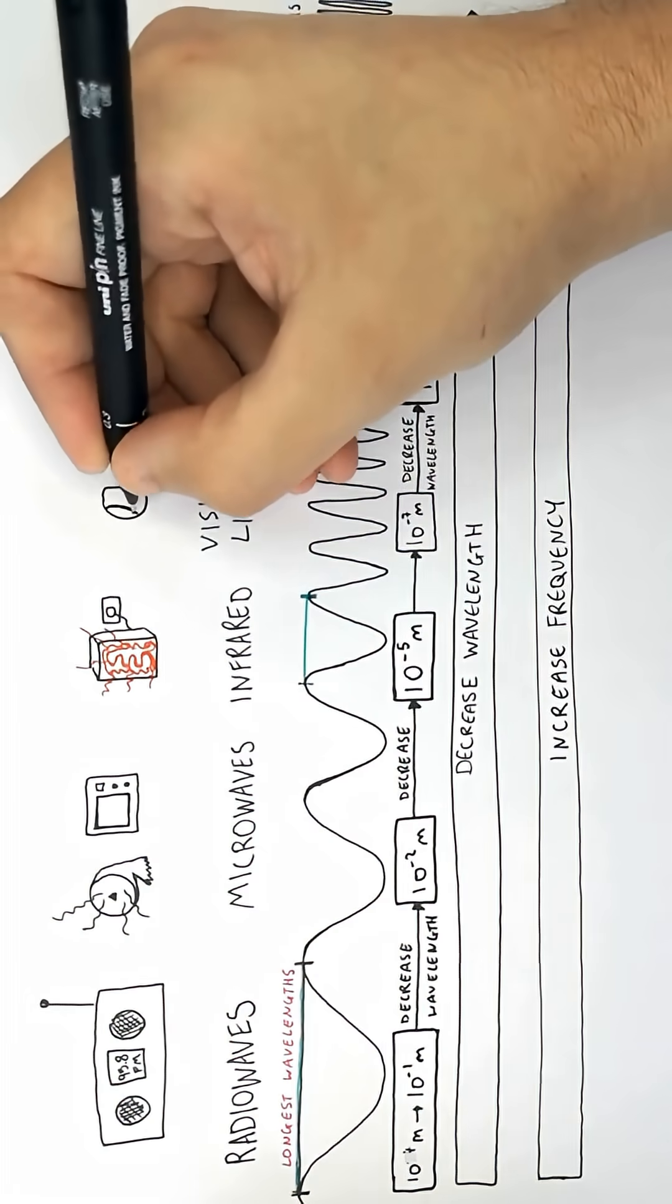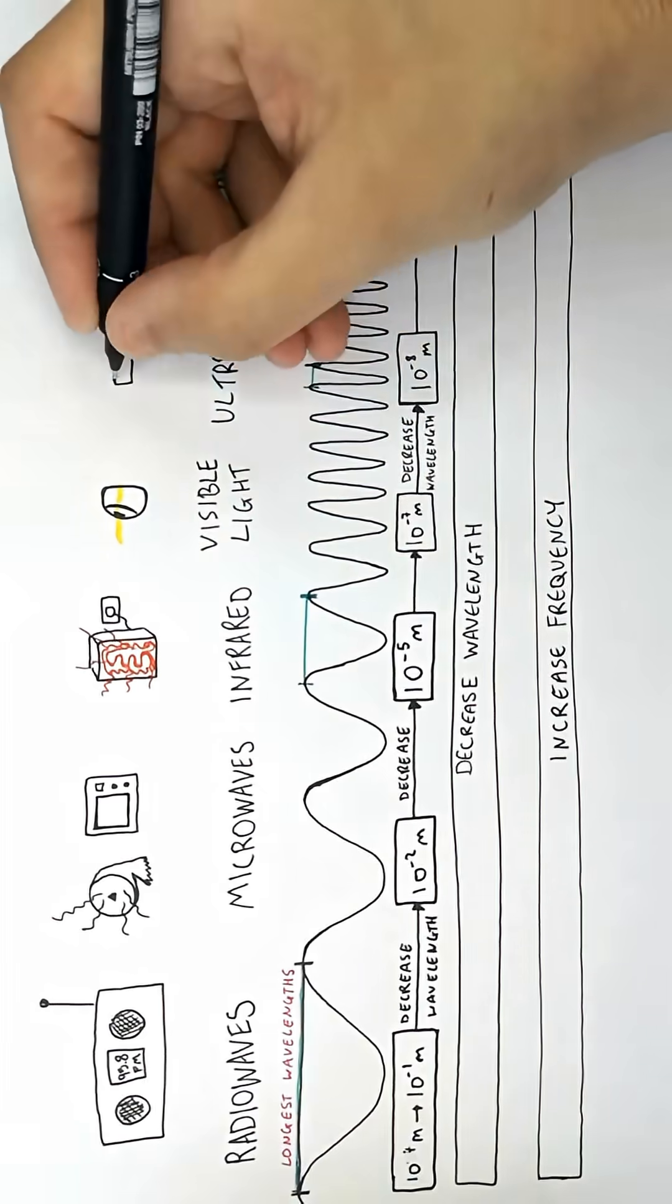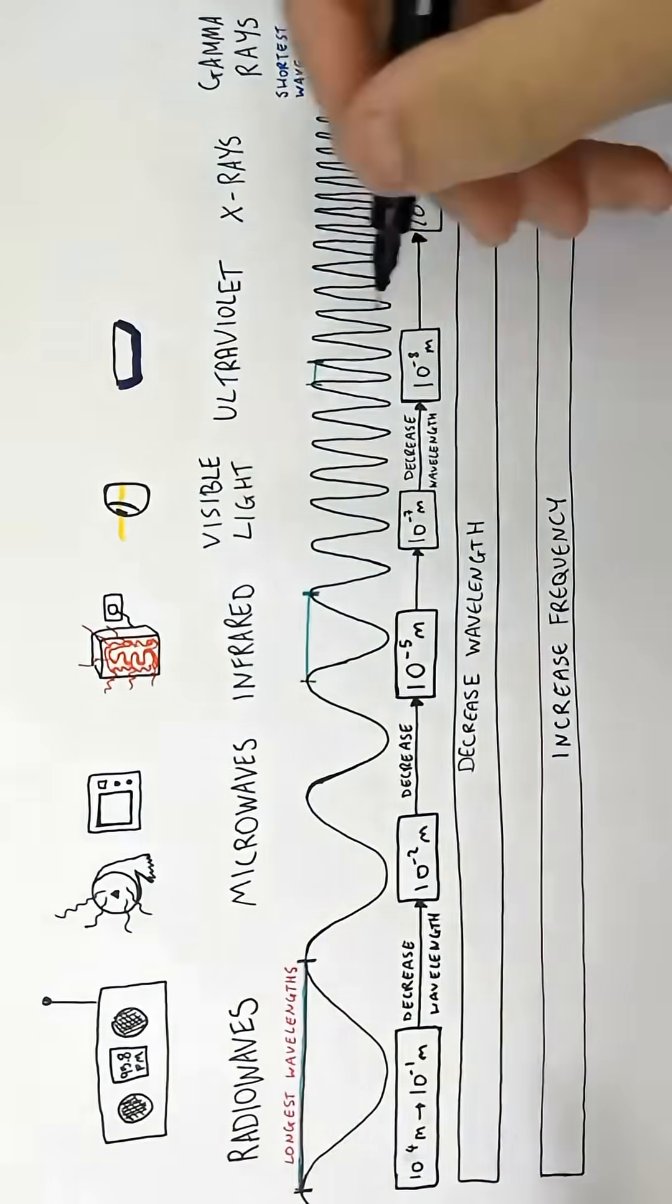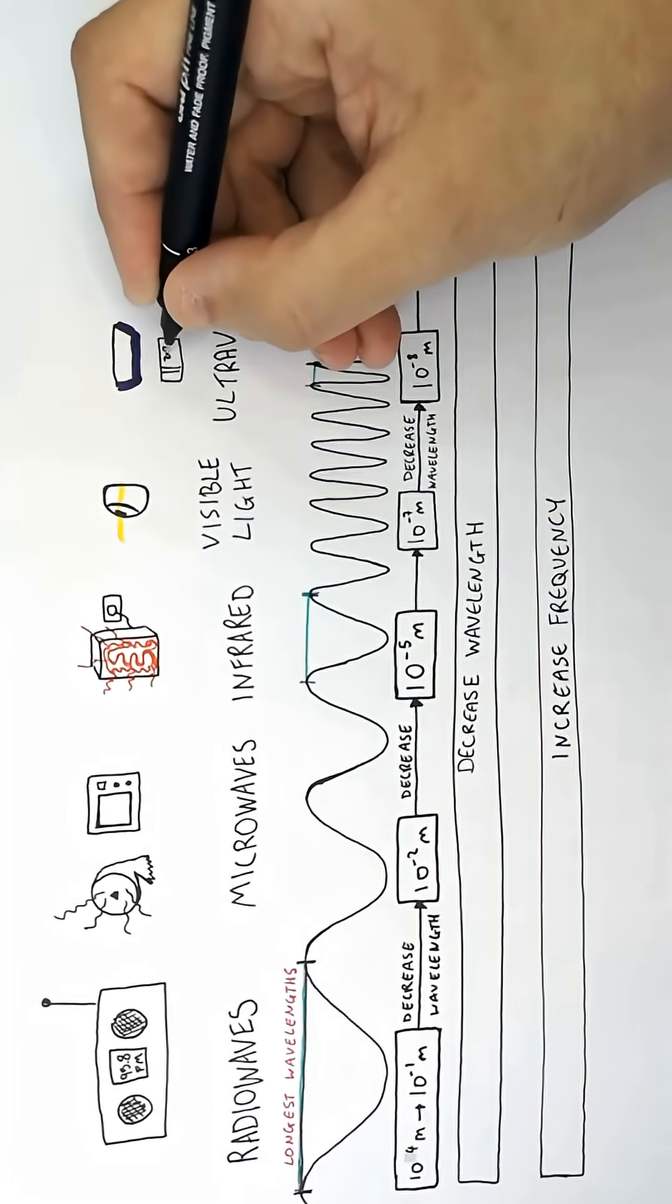We use visible light to see, but visible light is also used in other uses. We use ultraviolet light in many different ways, but one of the main uses of ultraviolet light is to check for forged banknotes.